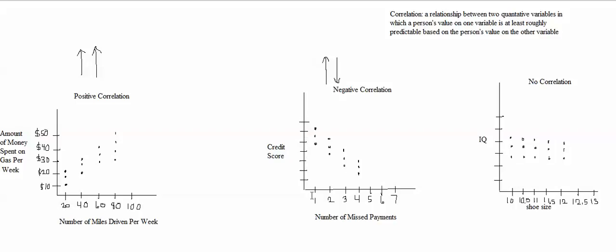If a person tells me that they've missed a large number of payments — for example, seven or eight payments — I'll think that person's credit score is probably lower; it's probably not as good. So since there's a correlation between number of missed credit card payments and credit score, you can use the number of credit card payments that a person has missed to make at least a rough prediction of what their credit score is.